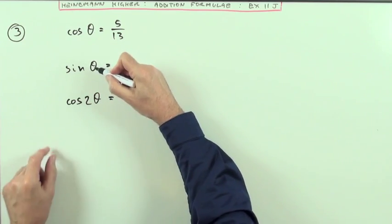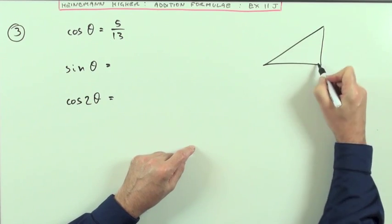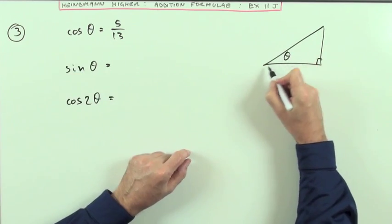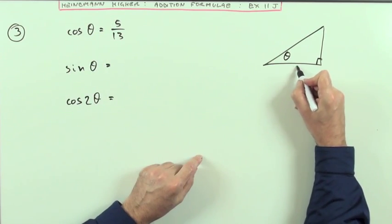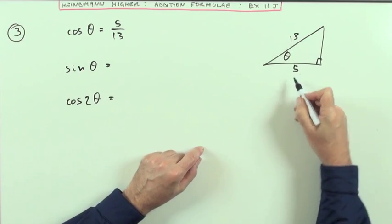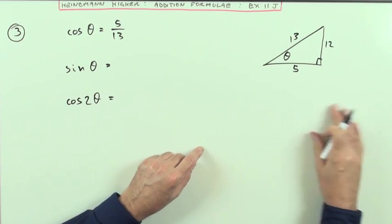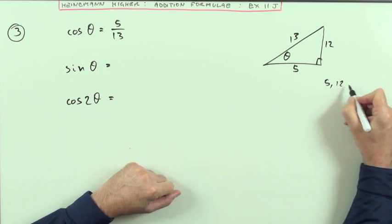The simplest way to get sine from cos would be geometrically by reconstructing the triangle that generated the angle theta. If the cosine is 5 thirteenths, it means the side adjacent to the angle is 5 and the hypotenuse is 13. And immediately, that makes that side 12 because that's that well-known Pythagorean triple, the 5 12 13 triangle.